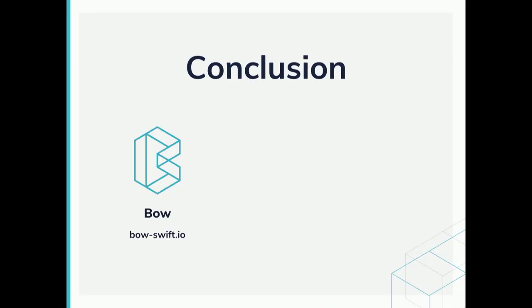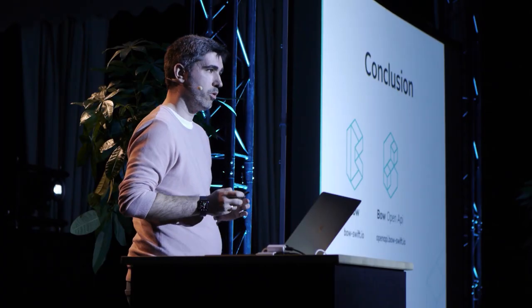Bow is a principal library to write functional programming using Swift. In this talk, I have only scratched the surface of what it is able to offer. So I encourage you to go and take a look at our documentation if you want to know more about Bow or want to learn more about functional programming. Bow has proven very useful for us to write our network layer, to the point we decided to create Bow OpenAPI and add it to our functional ecosystem. It is a very nice tool that we have been already using internally and that can save you a lot of time writing repetitive boilerplate code, with the additional benefit of having a result that is more composable and testable.